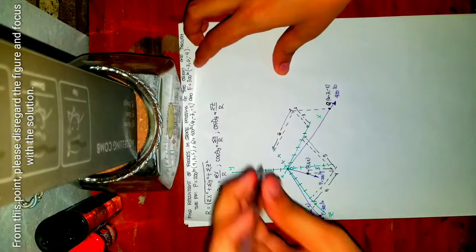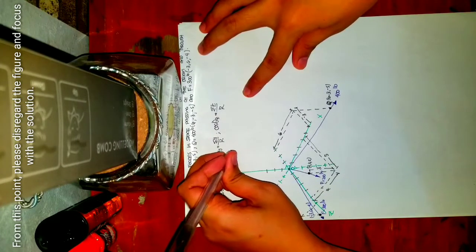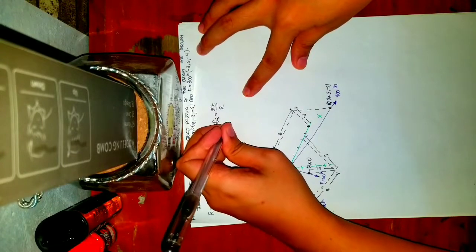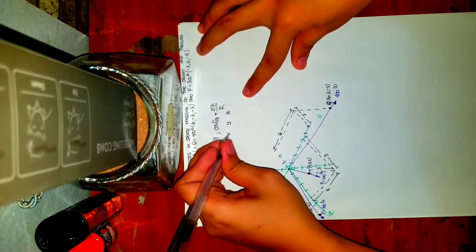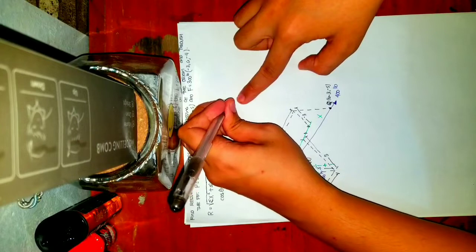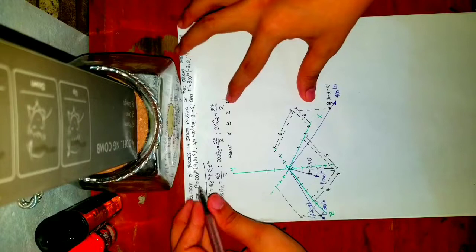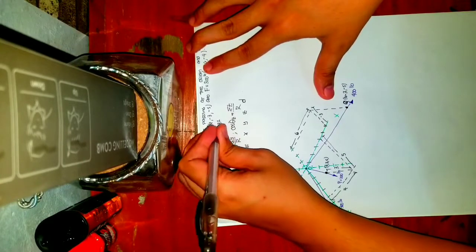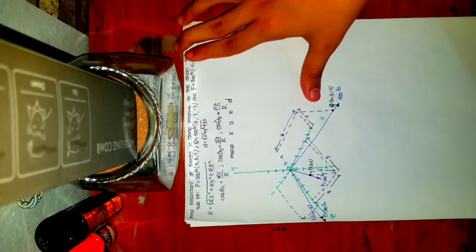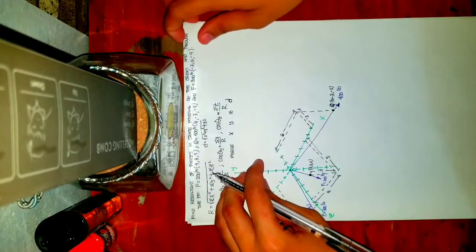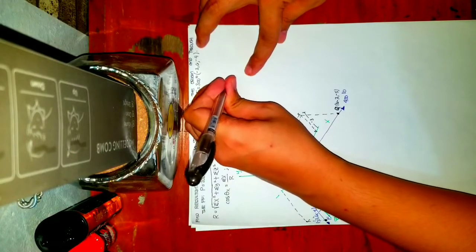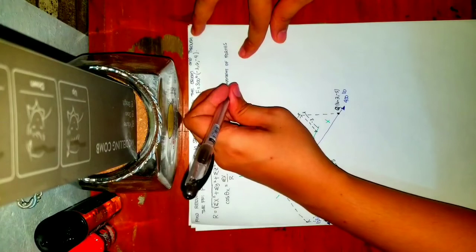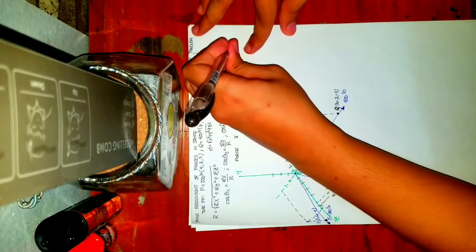Let's make a table. In the first column, I'll place the forces and their values. Next are the coordinates: X, Y, and Z. The next column is the distance D — the space diagonal — with formula D = √(X² + Y² + Z²). Then the next columns are for the components of the forces: one for X, one for Y, and one for Z.